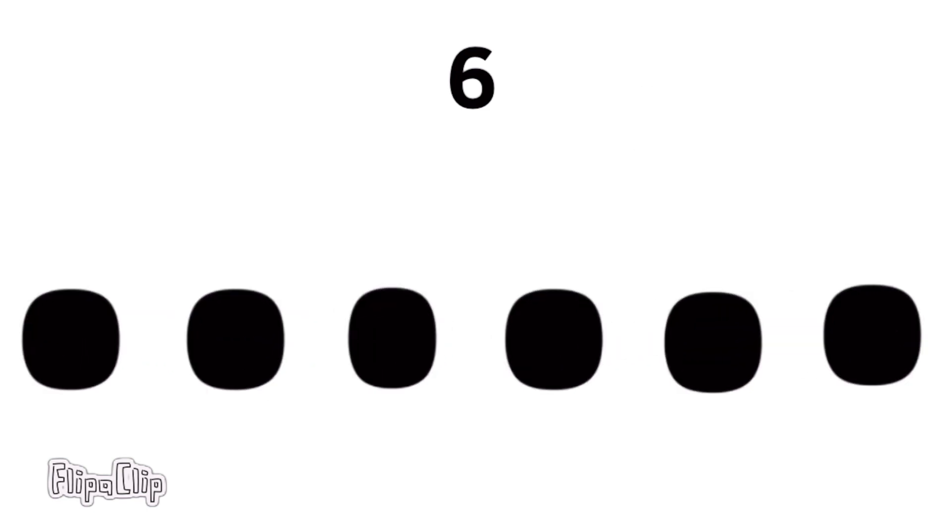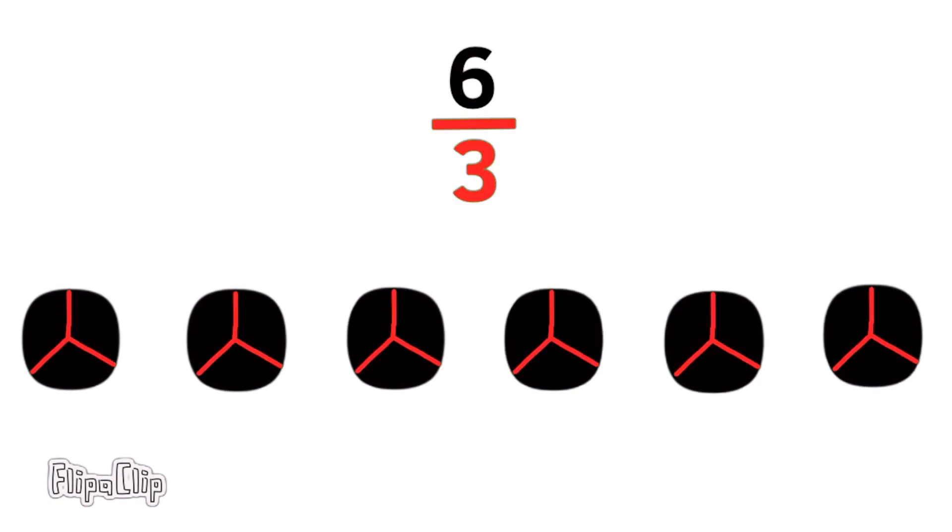Let's imagine the six units one last time. And let's divide them by three again. Six divided by three. That's the same thing as six thirds. And as you can see here, six whole units has a total of 18 thirds. And six divided by three translates to six thirds, or six times one third.